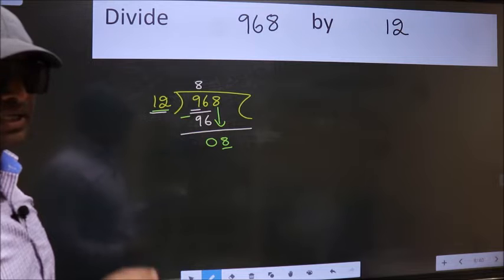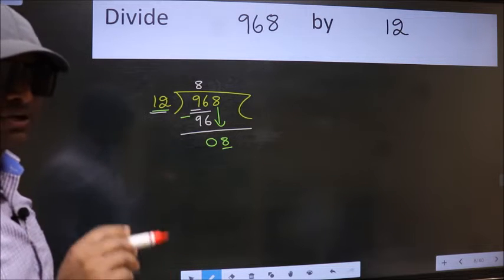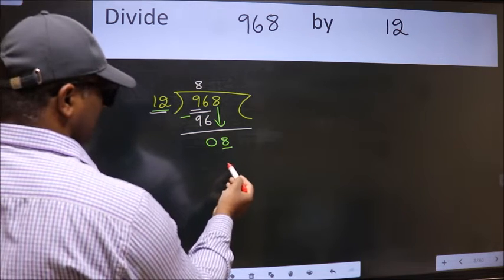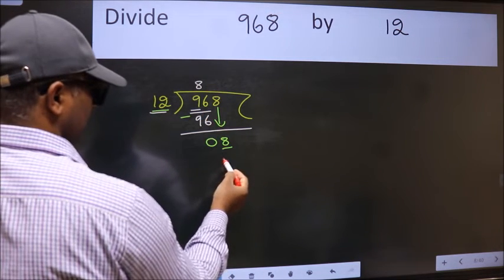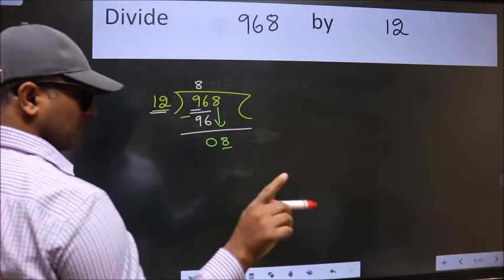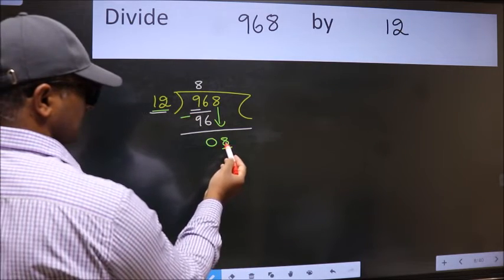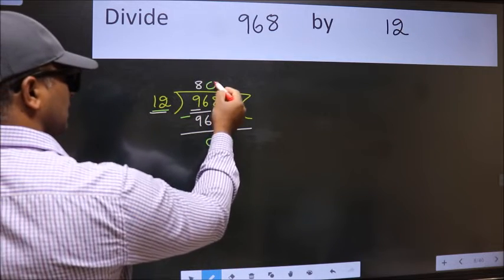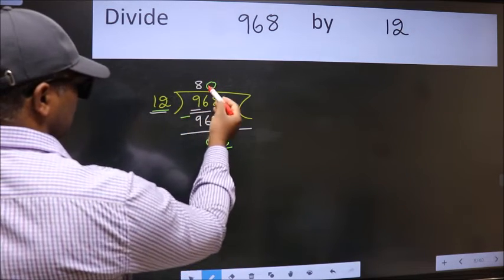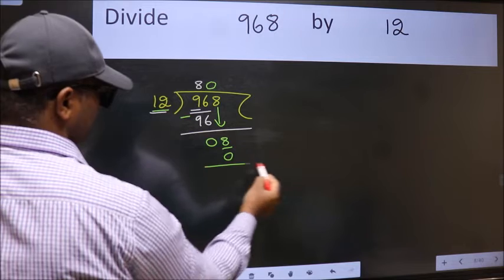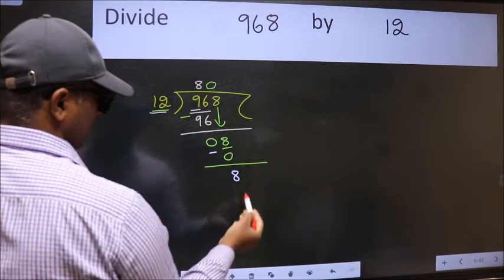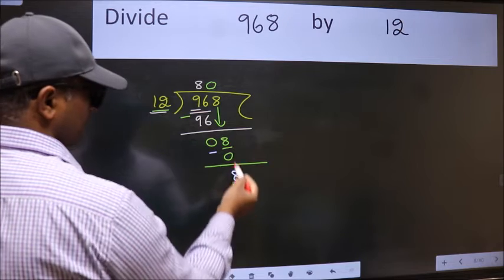Instead of that, what we should think of doing is: which number should we take here? If I take 1, we will get 12, but 12 is larger than 8. So what we do is we take 0 here. So 12 into 0 is 0.